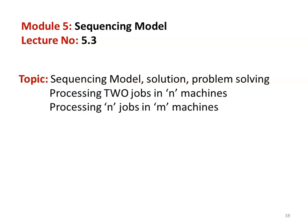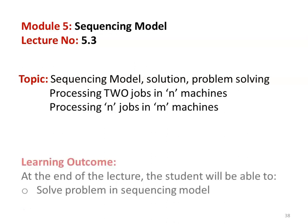Now we take processing two jobs in N machines and processing N jobs in M machines. We discussed the theory part of the sequencing model and the solution, and we solve problems in both models. The learning outcome: at the end of the lecture, the student will be able to solve problems in the sequencing model.